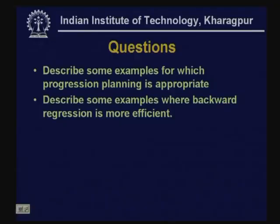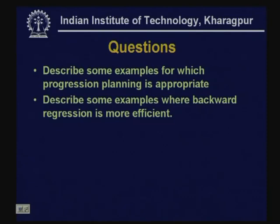Before ending, here are two questions to consider: first, come up with examples of planning problems for which forward planning or progression is an appropriate choice. Second, think of example planning problems for which backward search or regression is the right choice. We will discuss the partial order planning algorithm in greater detail in the next class.